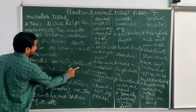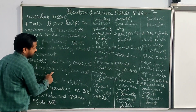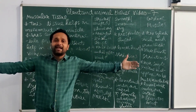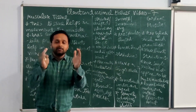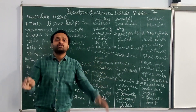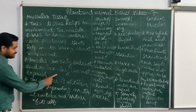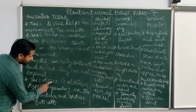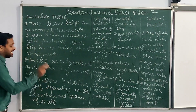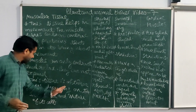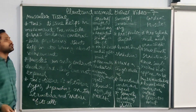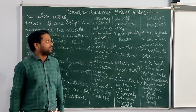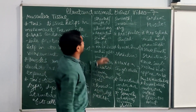The muscle can only contract and relax, not expand. It contracts, then relaxes back to its original position — it cannot expand. This tissue is of three types, depending upon the structure and nature of the muscle itself.